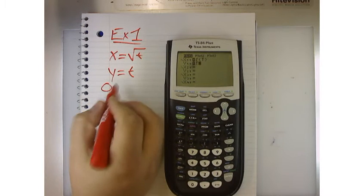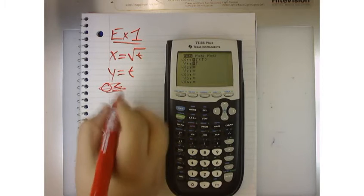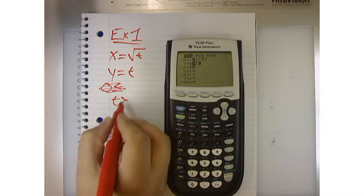We could set the parameter for t. So, we want t, in this particular case, t has to be larger than or equal to zero.